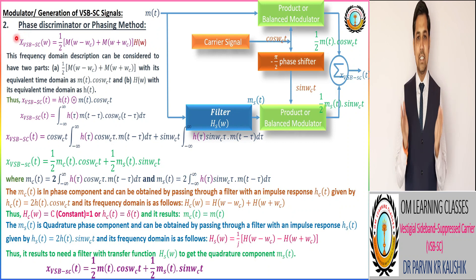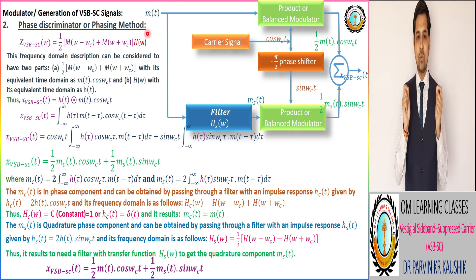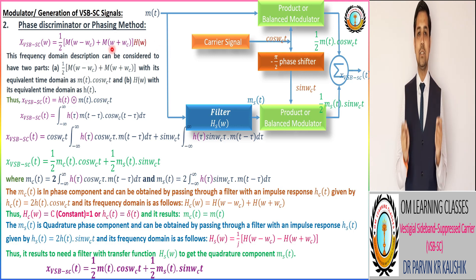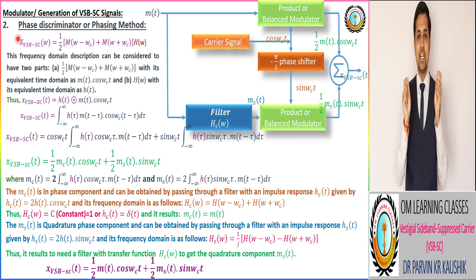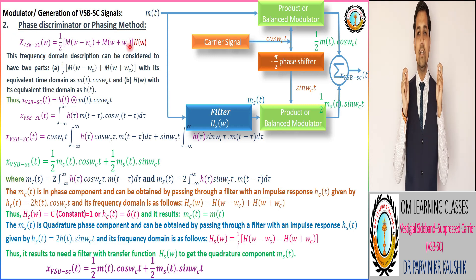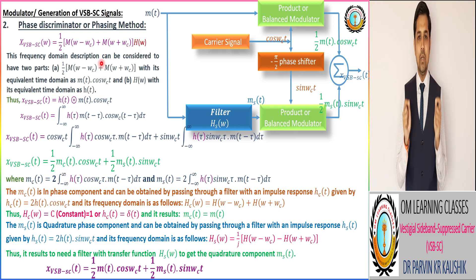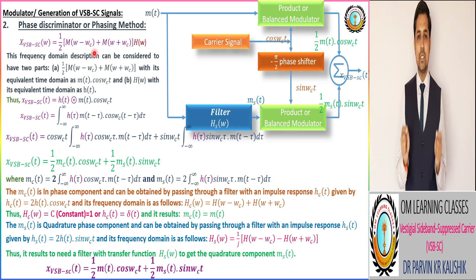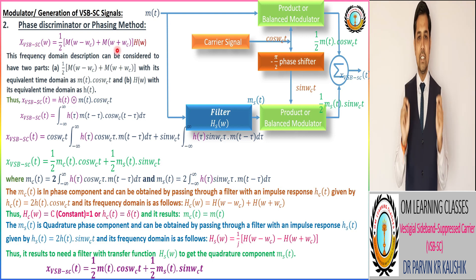Now we have a discussion about the second method, which is the phase discriminator or phasing method for the generation of the VSBSC signal. As per the introduction, we consider first the DSBSC signal, and that DSBSC signal is passed through a vestigial filter that has transfer function H(ω), so we get the frequency domain mathematical representation of VSBSC equivalent to (1/2)[M(ω - ωc) + M(ω + ωc)] · H(ω).